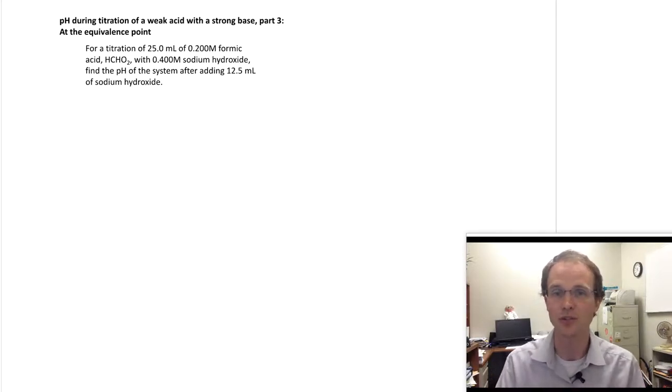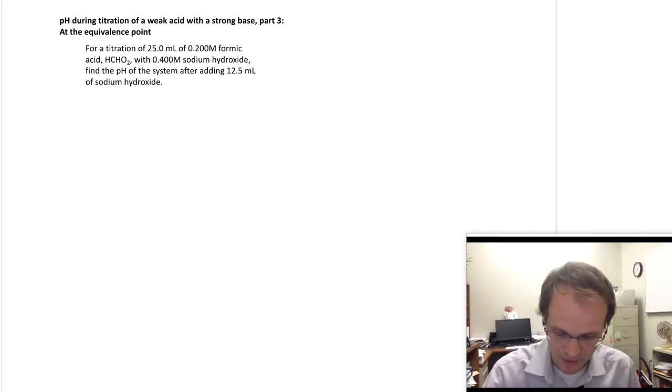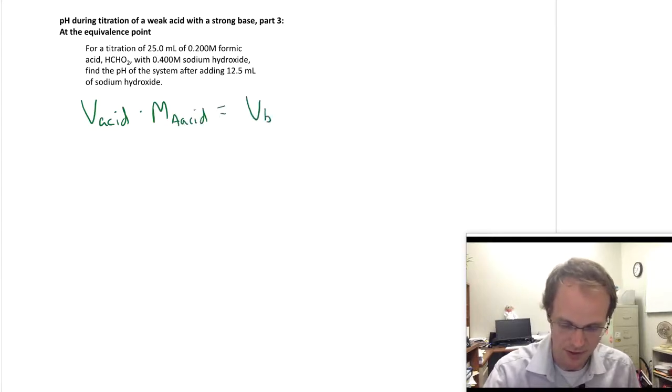Now, I told you that it's at the equivalence point, so you kind of know it is, but it's always good to remember how to calculate our equivalence point. And for a monoprotic acid and a monobasic base, it's volume times molarity of the acid is the volume of the base times the molarity of the base.